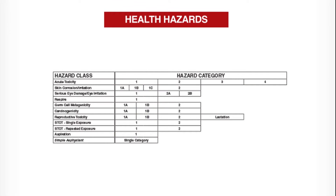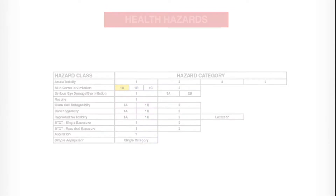For example, the skin corrosion/irritation class is divided into two categories: Category 1 is for corrosives and Category 2 is for irritants. Category 1 is divided into three subcategories — 1A, 1B, and 1C — with 1A being the most corrosive.